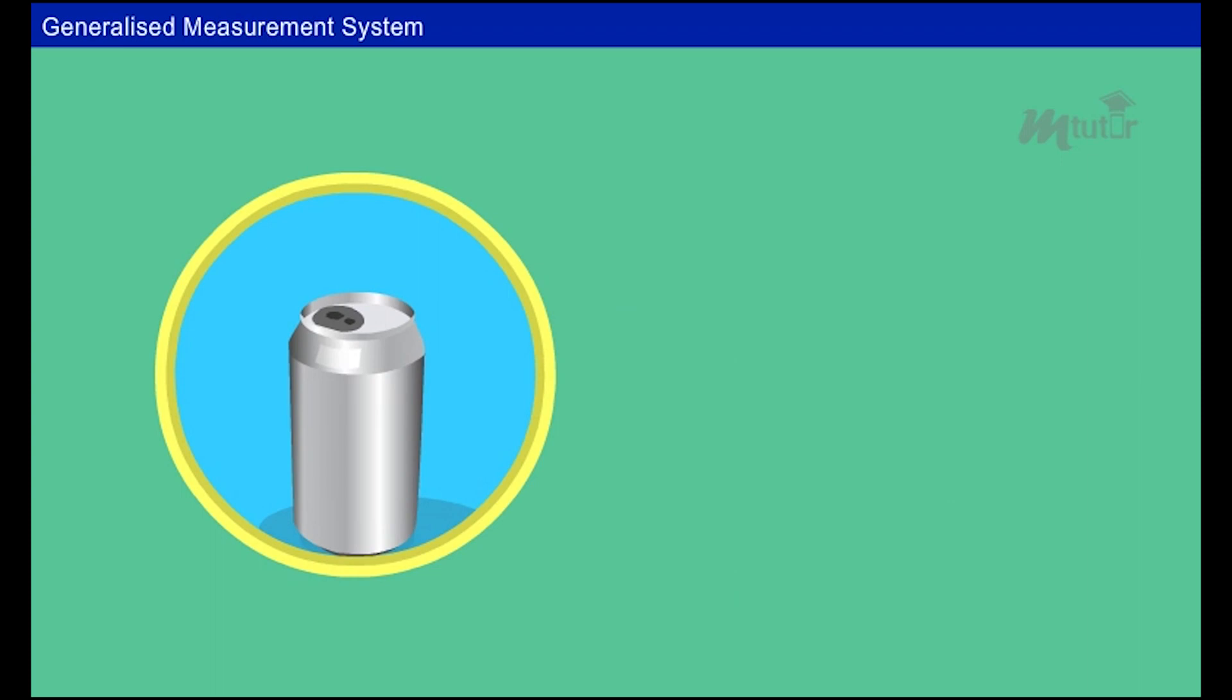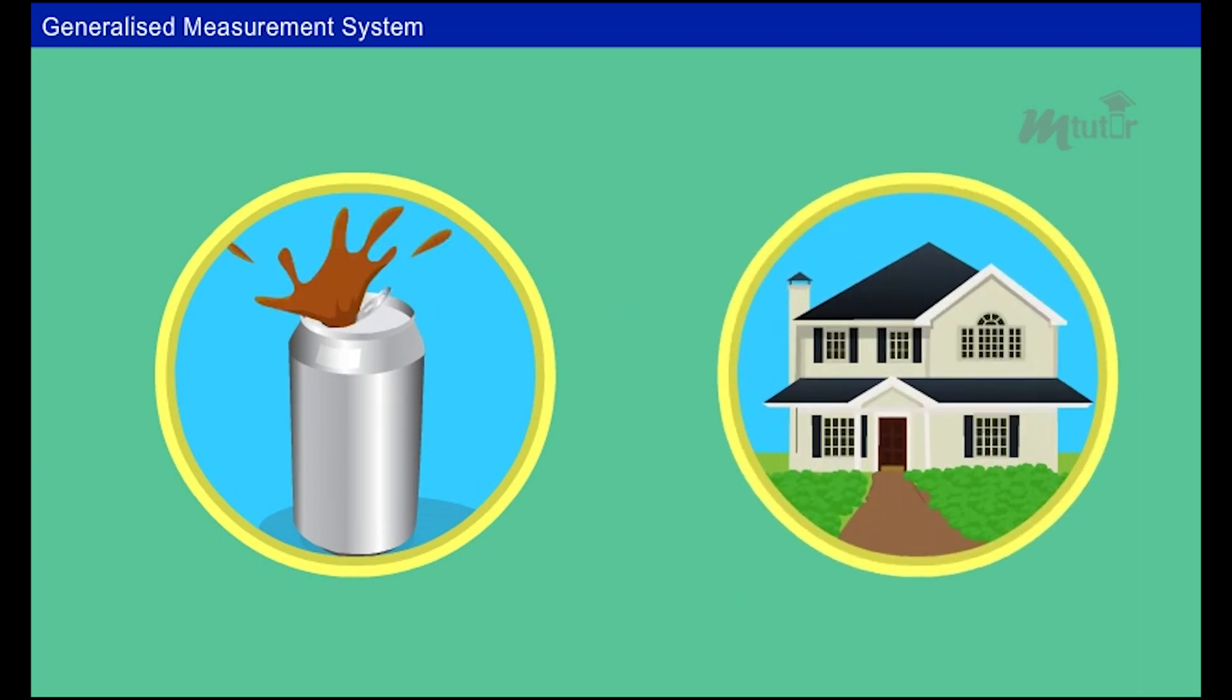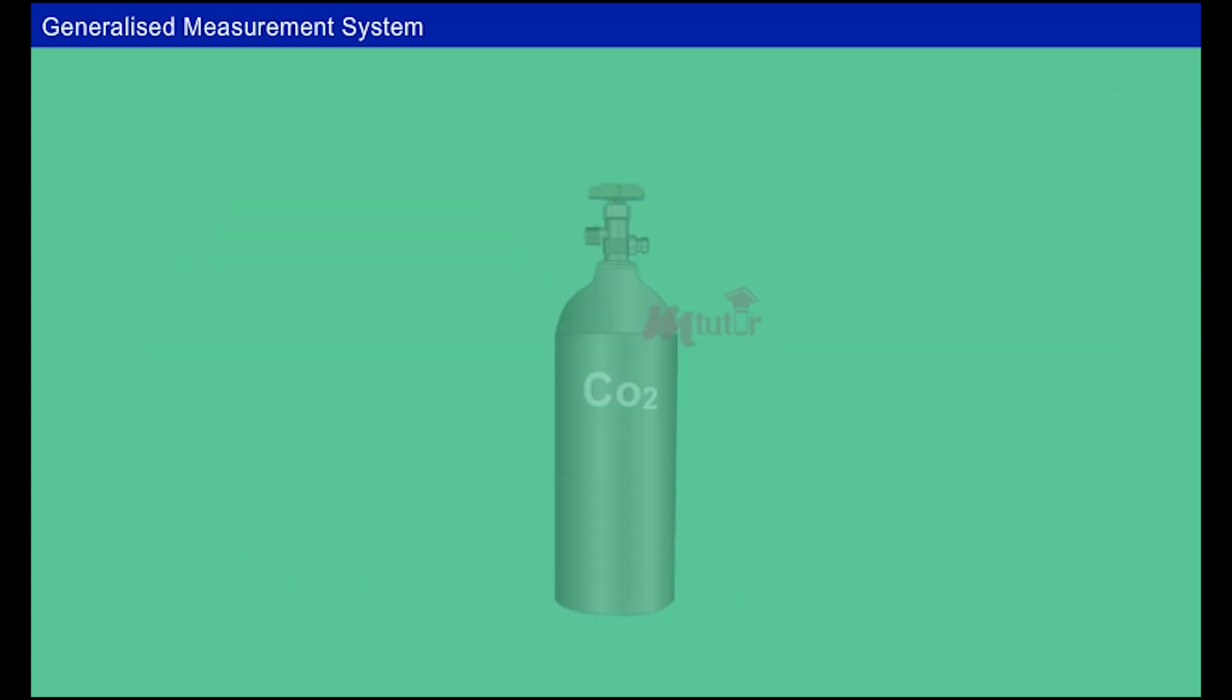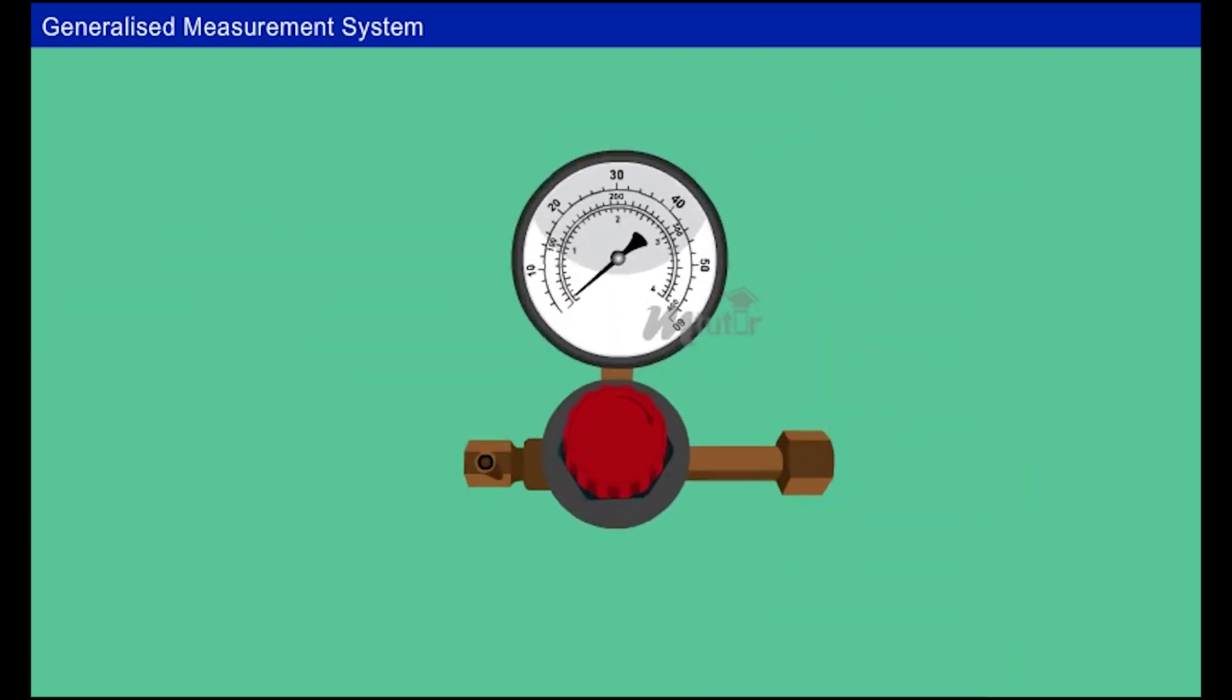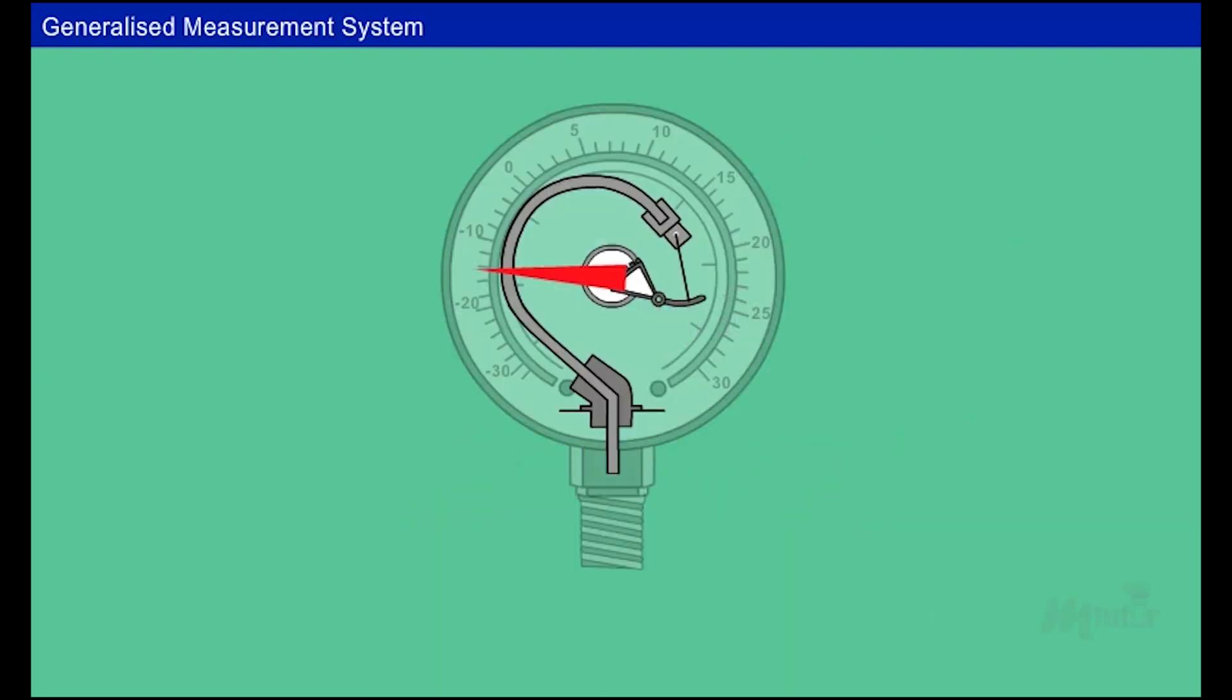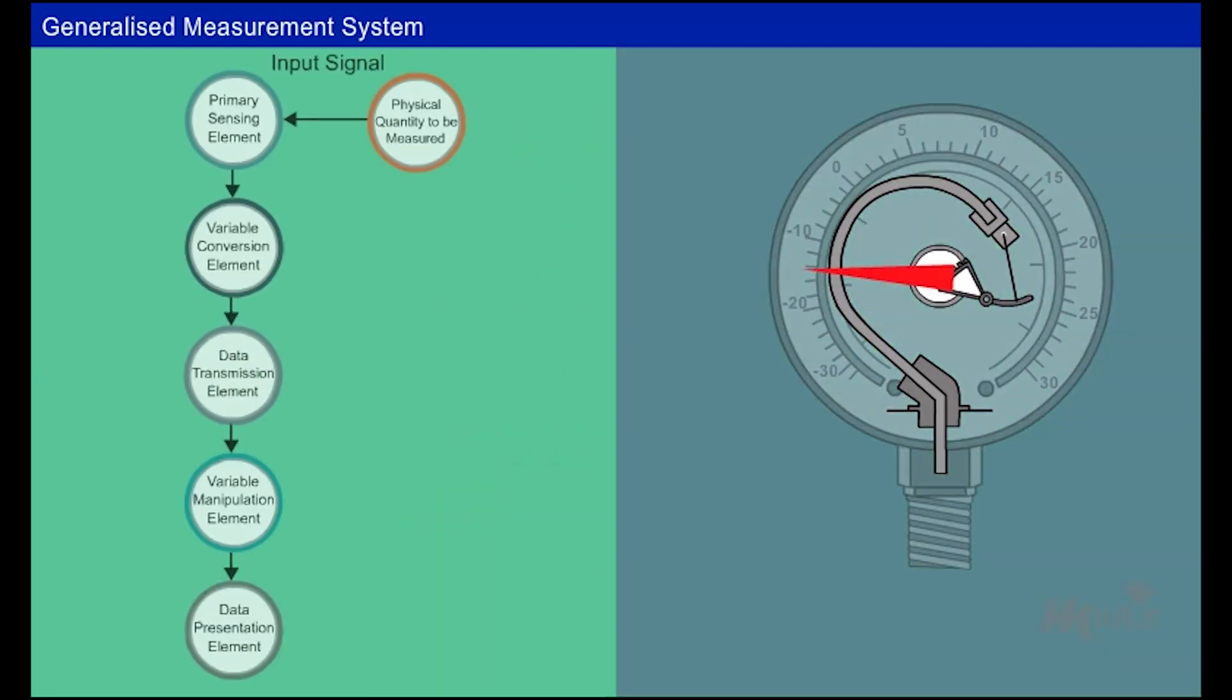We all consume aerated drinks. Can we carbonate the drinks at home? Yes, we can. All we need is a CO2 tank with a regulator. The taste of the drink is enriched by injecting CO2 into the liquid. The pressure gauge is placed to monitor the pressure of the carbon dioxide. Here, the measuring instrument is the pressure gauge. How does the system work?